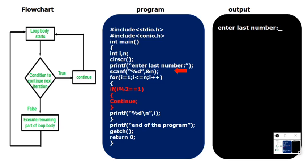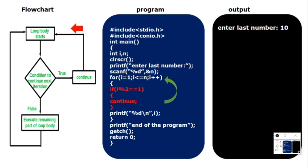In this program I want to print even numbers till 10: 2, 4, 6, 8, 10. I've entered last number as 10. i starts at 1 — condition 1 less than or equal to 10 is satisfied. Then it checks the if condition: i percent 2 equals 1, meaning 1 divided by 2 has remainder 1 — condition satisfied, so continue skips the printf and pushes back to the for loop. So 1 is skipped. Next, i becomes 2: 2 divided by 2, remainder is 0 — condition fails, so it prints 2.